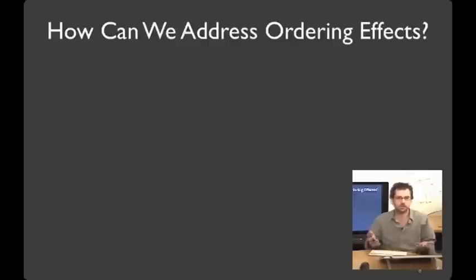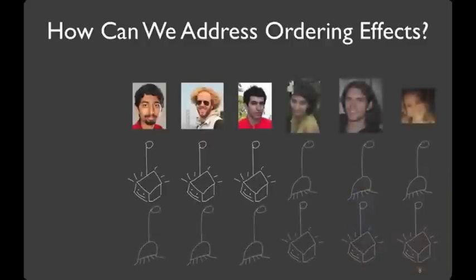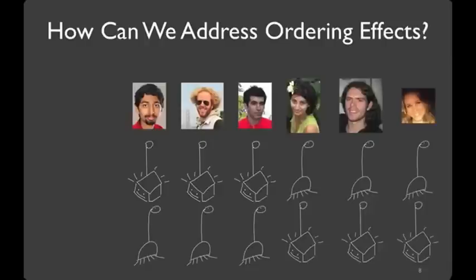Well, how might we address these ordering effects? Well, one thing that we could do is we could take half the people and have them try one interface first. And the other half, and try the other interface first. Counterbalancing has a couple of nice properties. For starters, you can treat it as completely a between-subjects design if you look at only the first task that people do.